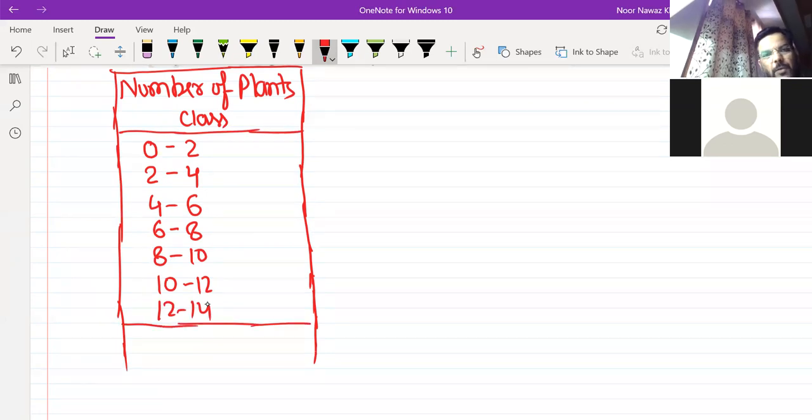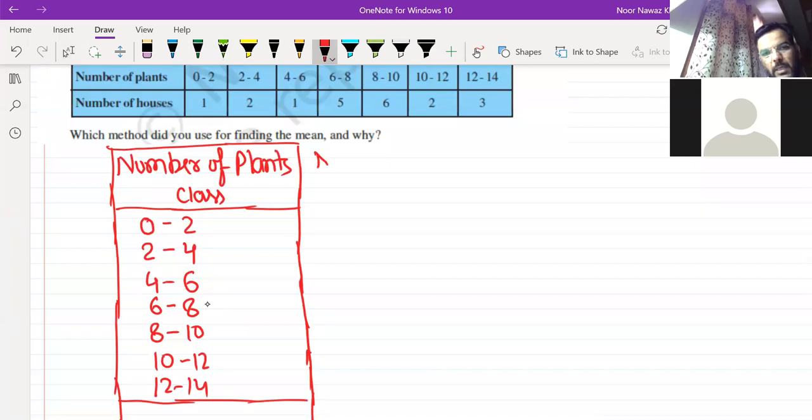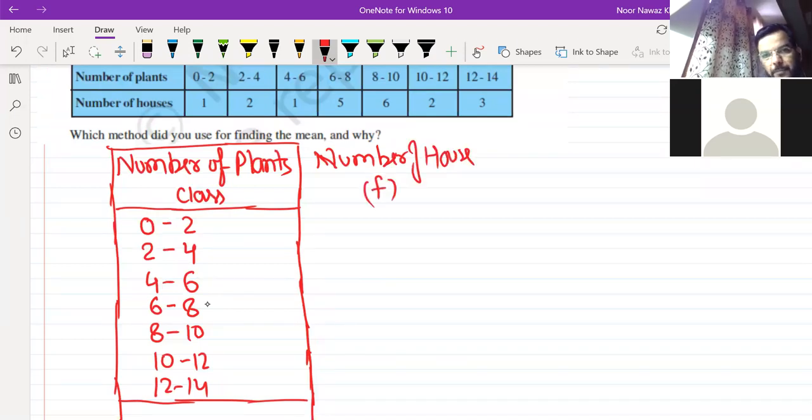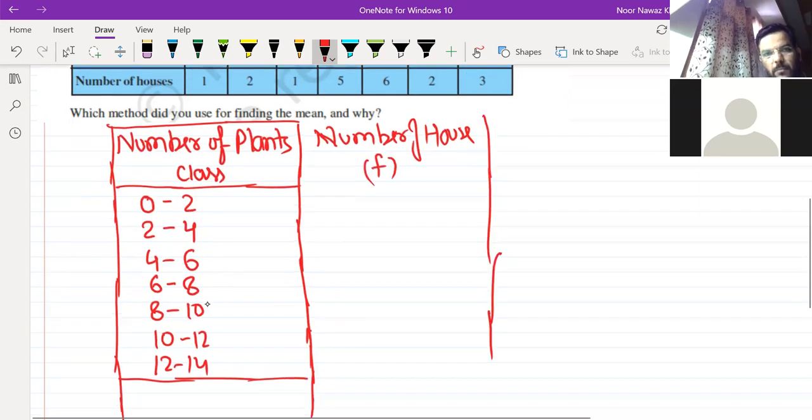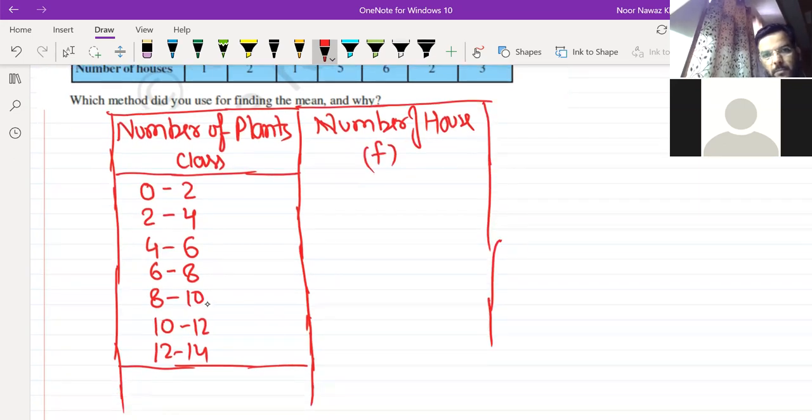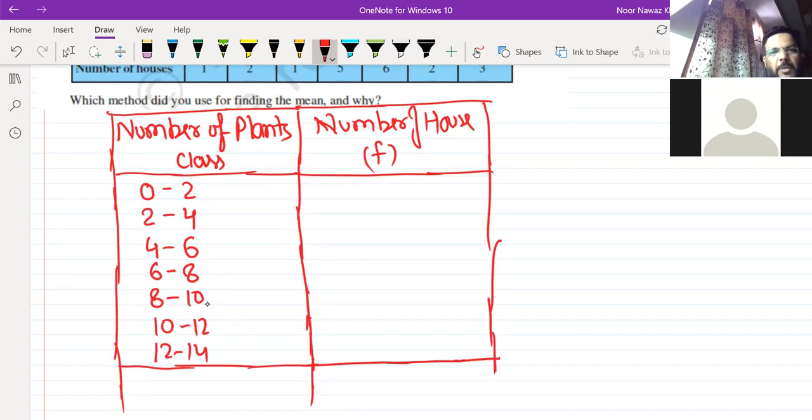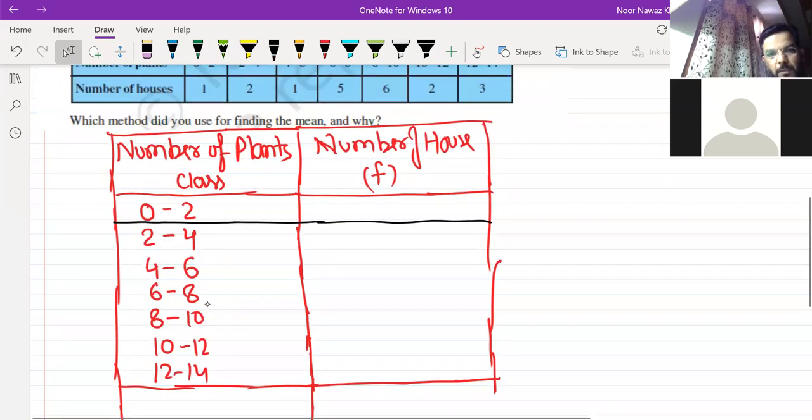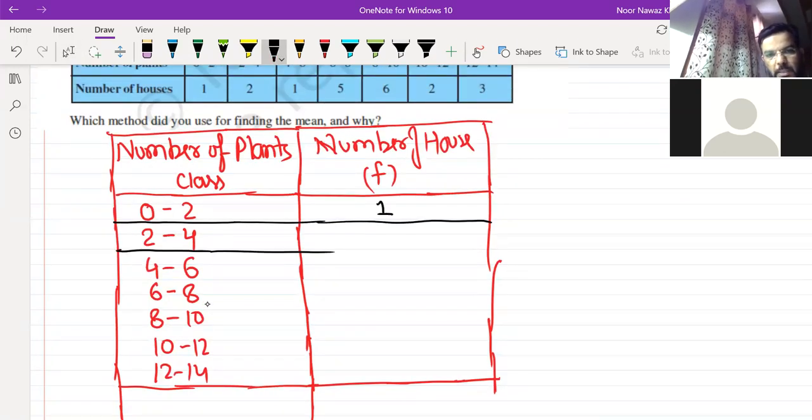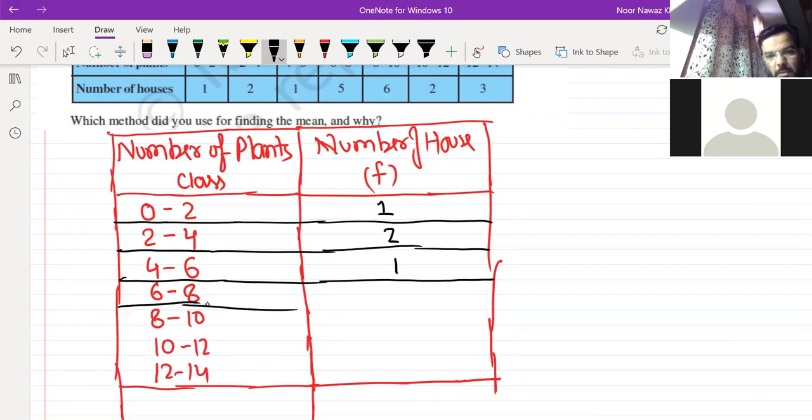Now we have the number of houses. So the number of houses, which we call the frequency. The frequency is 1, 2, 1, 5, 6, 2, 3.